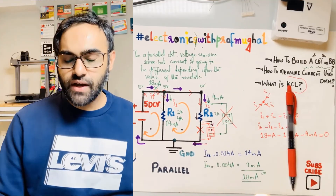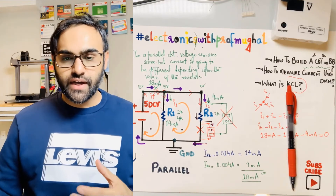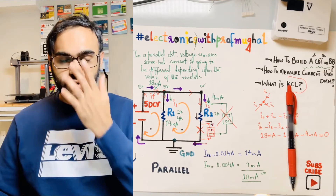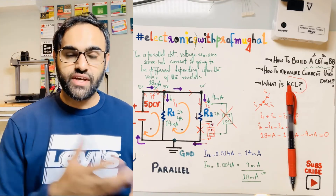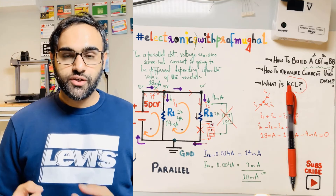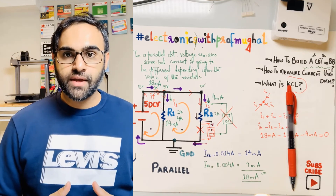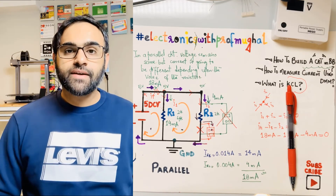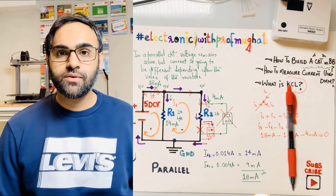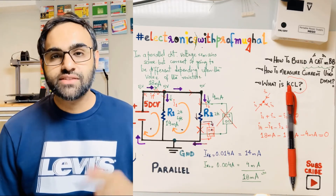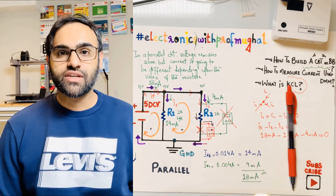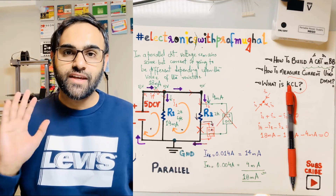That was a basic introduction to building circuits on a breadboard. I covered the parallel circuit, showed how to measure voltage and current using a multimeter, and demonstrated how to supply voltage using the power rails. Please give me feedback on how you liked this video, and if you haven't already, please subscribe to the channel. Thank you, bye.